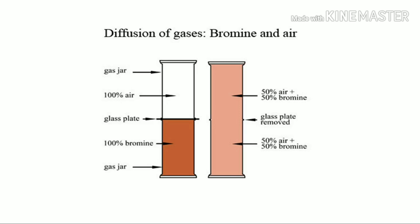When the glass plate is removed, the bromine mixed with air randomly and the color spreads. This means that particles in gas are always moving randomly in all directions. This property is called diffusion.